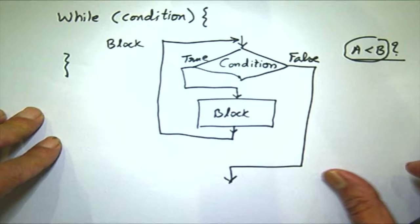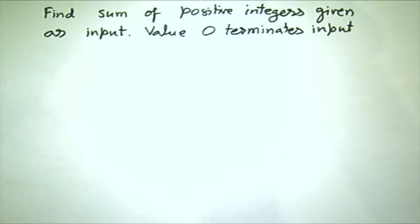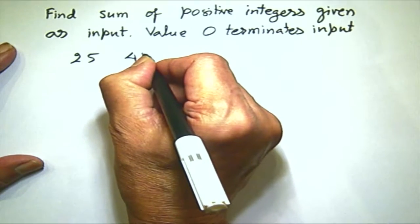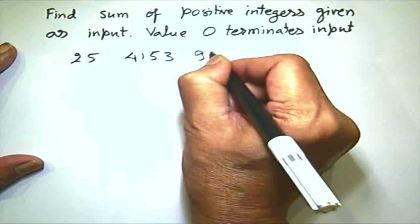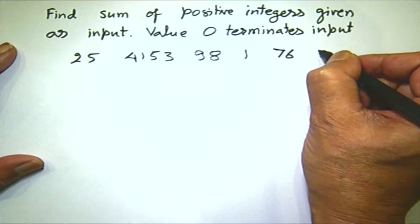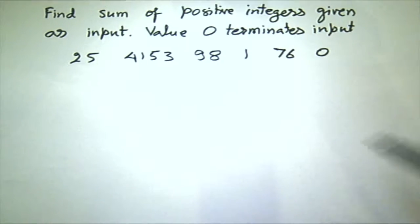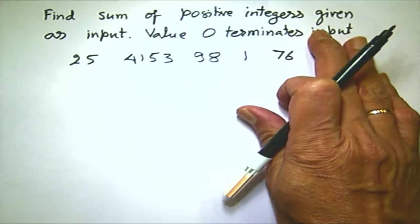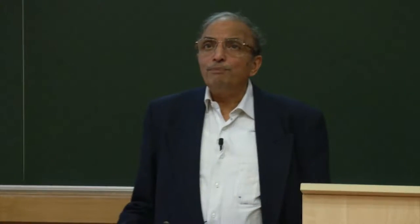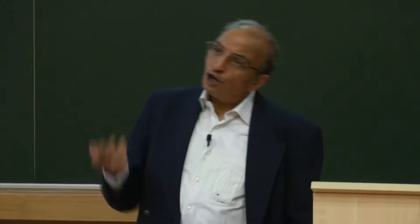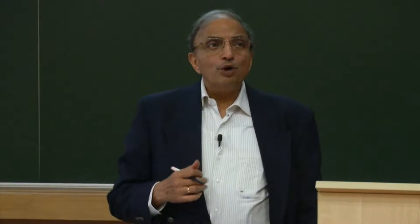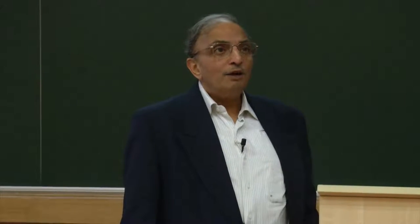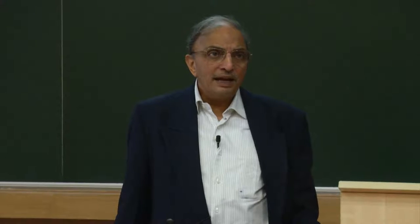Let us examine how we could set up a loop. I am given some arbitrary positive integers: 25, 4015, 4153, 98, 1, 76, and then I give 0. I can keep giving numbers one after another, and when I give 0 my input has ended. I want to find out the sum of all the numbers up to 0. The number of numbers I am going to input is not specified — I can input 100 numbers, 5000 numbers, 2 numbers. Can I input no number at all? Yes, I just type in 0 as the first number.